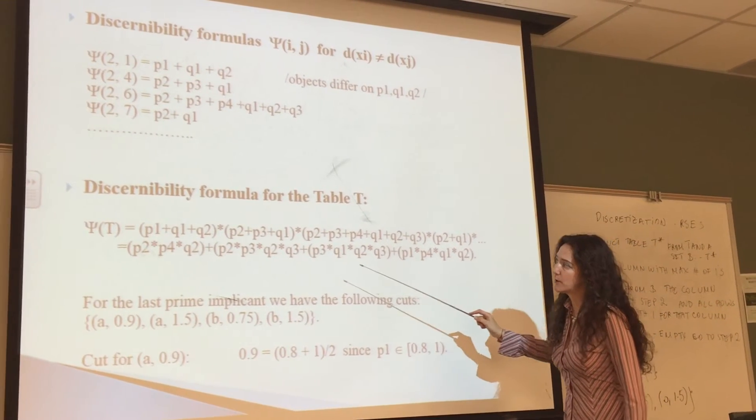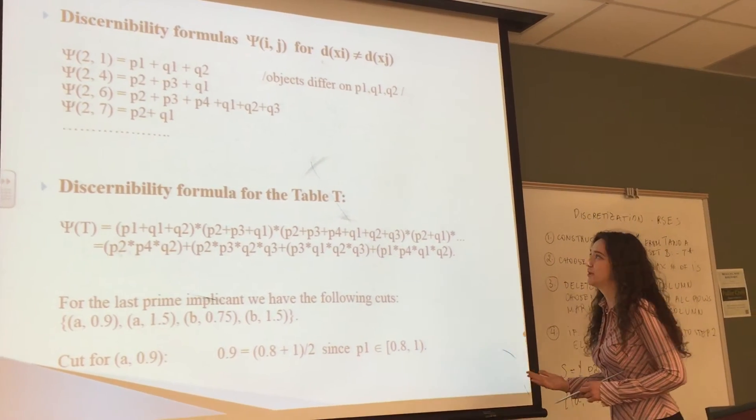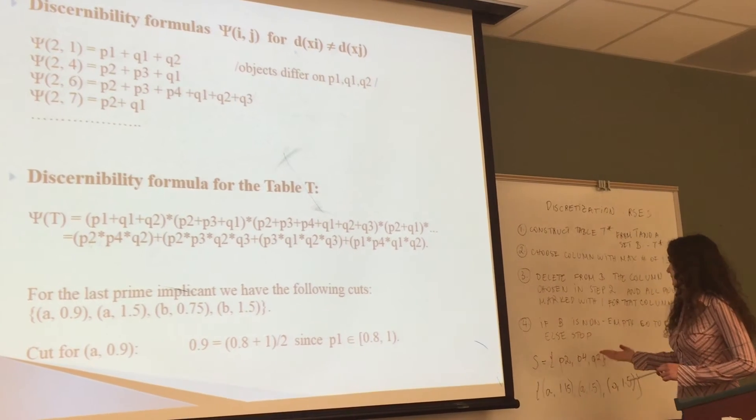And so after we cross out some of them we would eventually simplify the formula and end up with something like this.